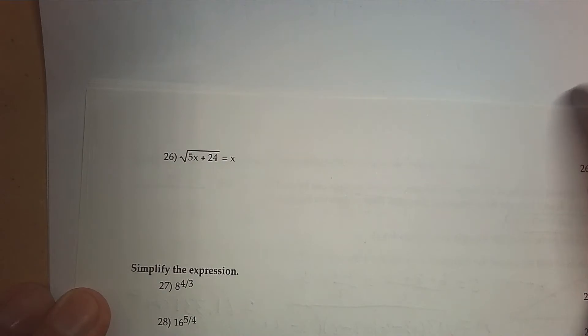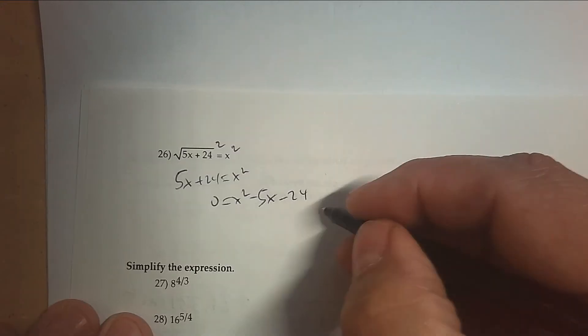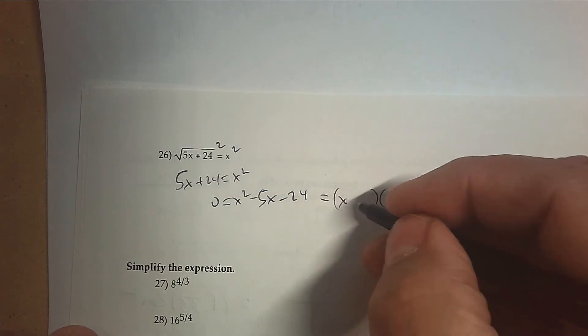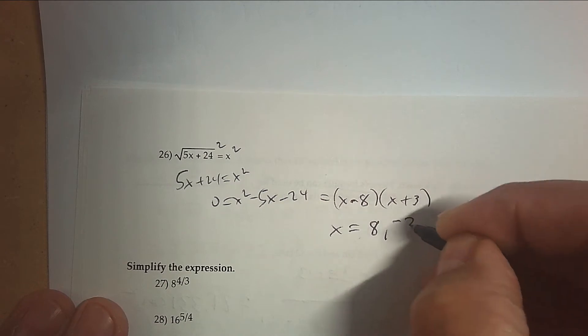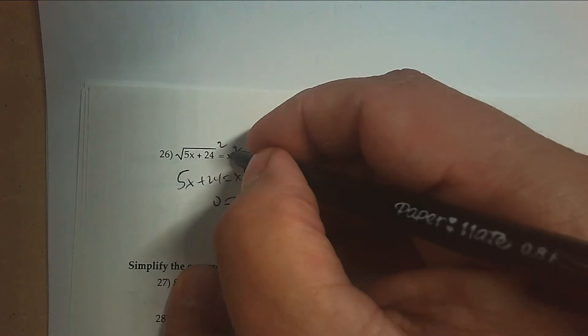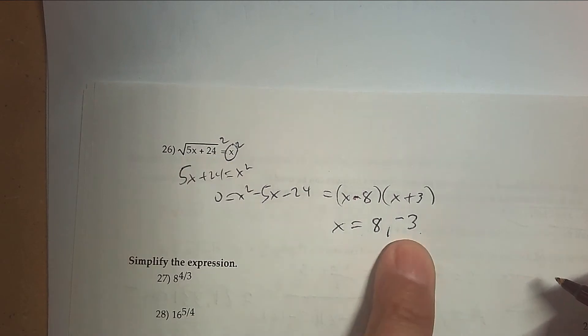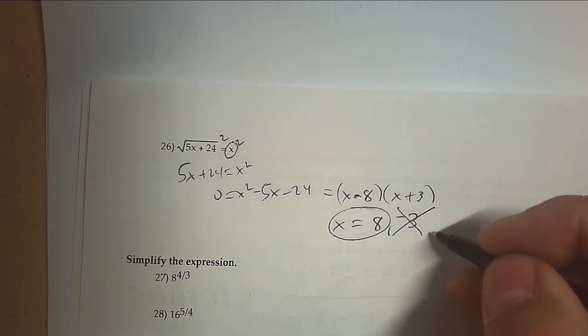Number 26: square both sides, but be careful — you end up with a quadratic. So I need to make it equal to 0 by subtracting 5x and subtracting 24. Factor it: what two numbers multiply to −24 and subtract to 5? That's −8 and 3. So each factor gives an answer: positive 8 and negative 3. But the answer for x cannot be negative because the square root can't be negative. So negative 3 doesn't work — the only correct answer is 8. We call this extraneous.